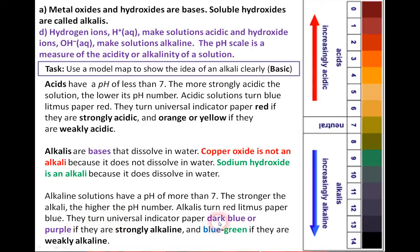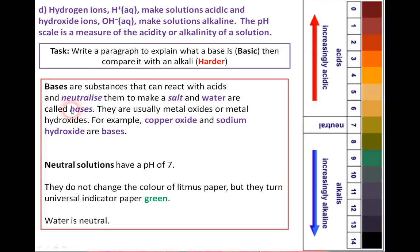The red litmus paper turns blue in alkaline solution. They turn universal indicator paper dark blue or purple if strongly alkaline, and blue-green if weak. The only key difference from key stage 3 is the distinction: sodium hydroxide is an alkali because it does dissolve in water, whereas copper oxide is not an alkali because it does not dissolve in water. Any base that dissolves in water is called an alkali, but copper oxide is a base that doesn't dissolve — so there is a difference.